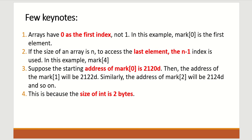Some key notes: arrays have zero as the first index, not one. In the given example, mark[0] is the first element. Second point: if the size of an array is n, to access the last element it will always be n minus one, because the index always starts from zero. That is why in our example it is mark[4], not mark[5].